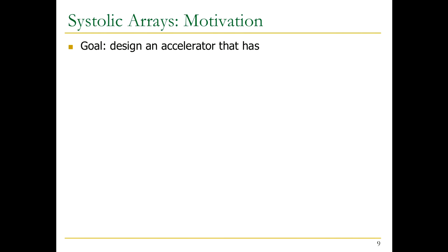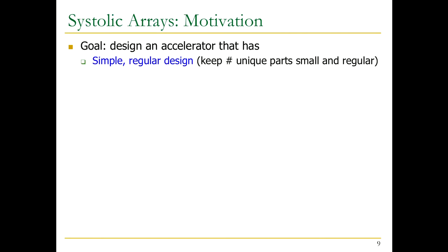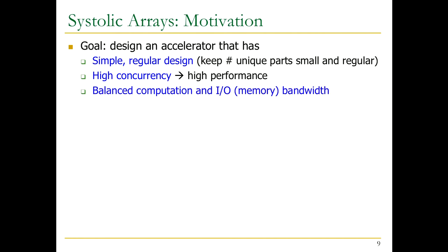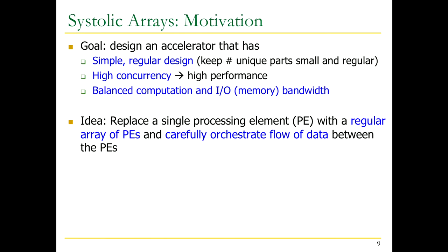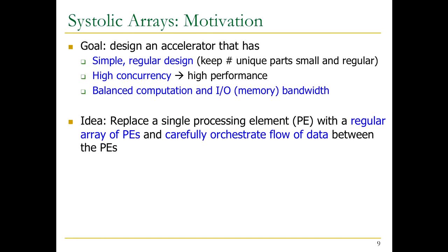The goal in the 1980s, when these were first designed, was to design an accelerator—not a complete execution model, but an accelerator that helps with some tasks. They wanted to keep the unique parts small and regular, with high concurrency and very high performance. At that time it was vision and image processing; today people are looking at neural networks. They wanted to balance computation and I/O bandwidth. The idea is very simple: instead of having a single processing element going to memory every time, you have an array of processing elements.